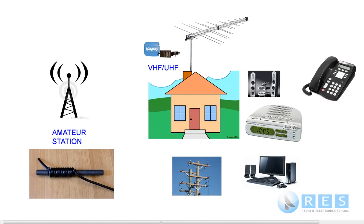This slide shows an amateur radio station and next door we have his or her neighbour. The neighbour has a television antenna pointing away from the amateur, which is good. They've also got an amplifier on the mast, and of course there are power lines connecting power to the neighbour, and those power lines also come into your station.